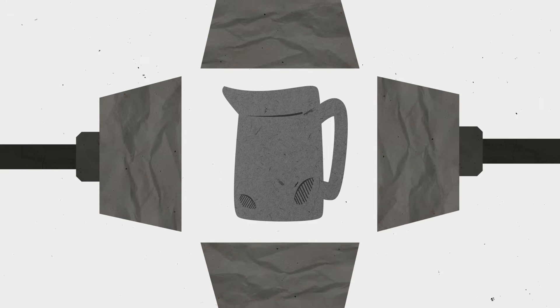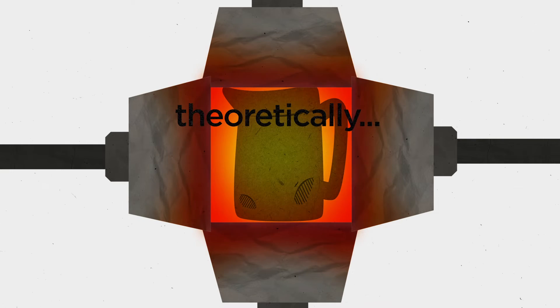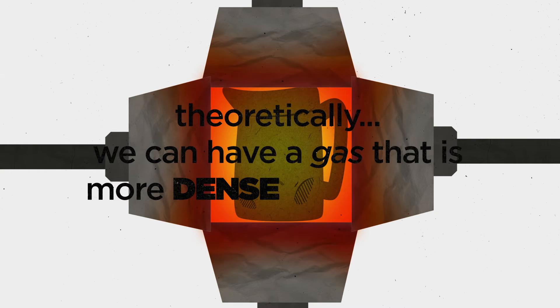The thing is that the more pressure you put, the more heat you need to maintain a gas from condensing. So, we need to put enormous amounts of pressure on our kettle, and heat it so much that our gas cannot condensate, and theoretically, we can have a gas that is more dense than a liquid.